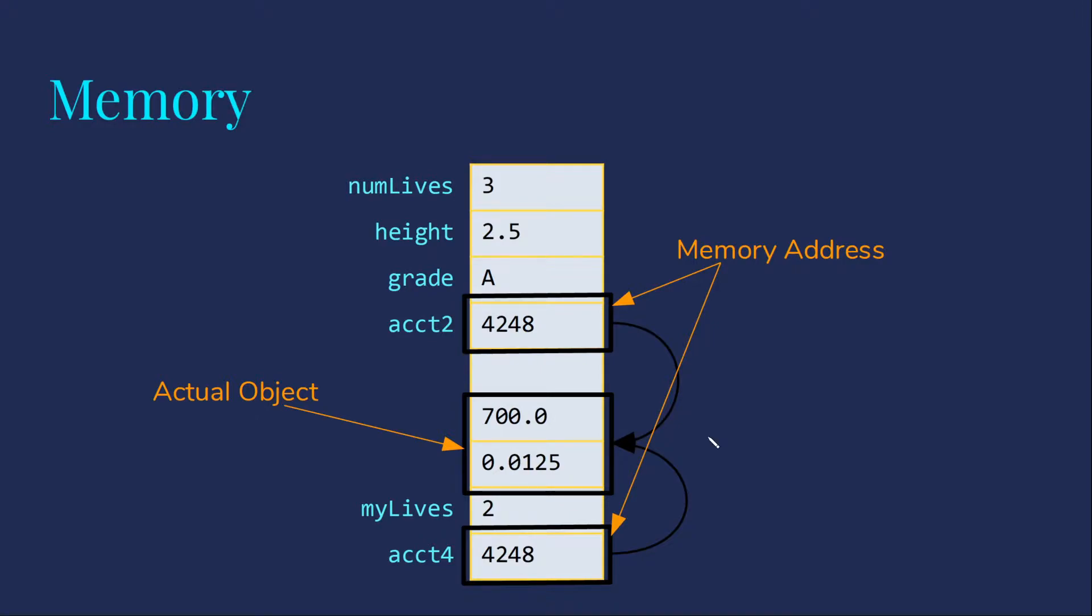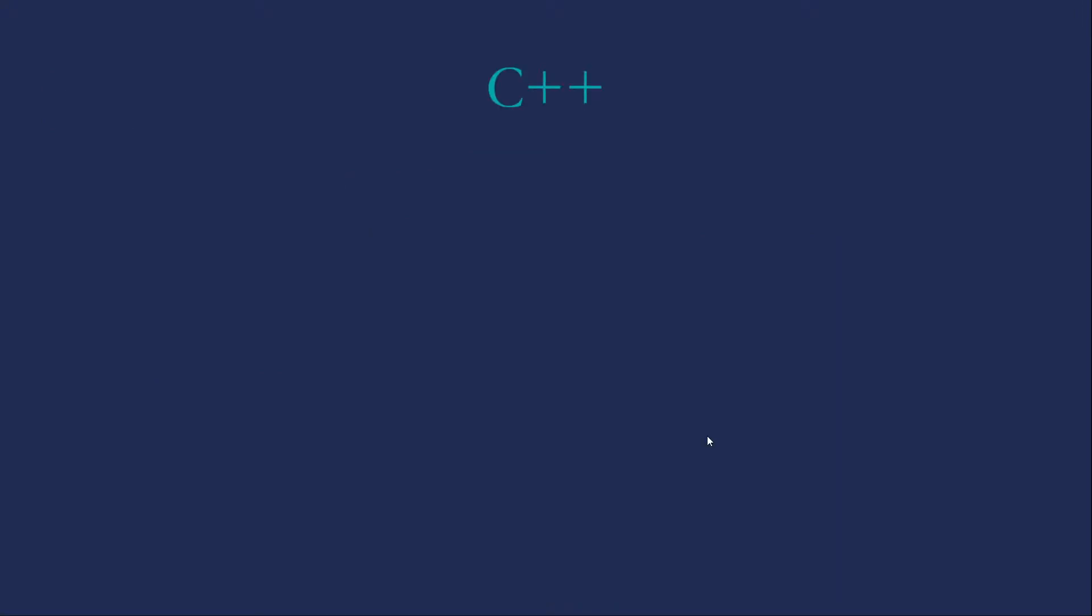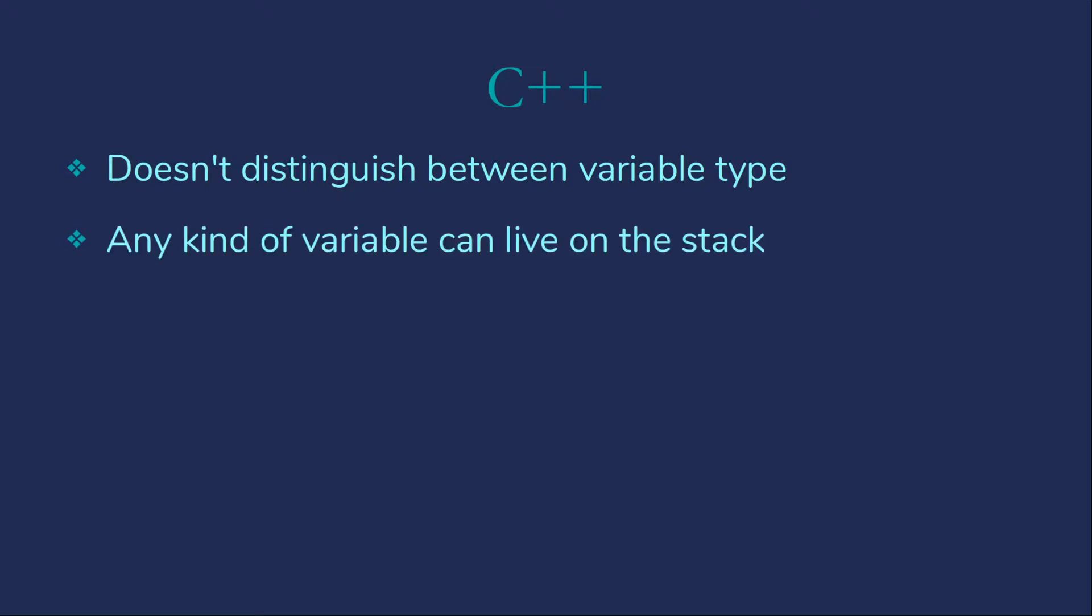With that in mind let's start thinking about C++. First of all, C++ doesn't distinguish between the variable types. Whatever type of variable you have you can put it on the stack, basically have it be like numLives or myLives where we get a copy of the whole thing. We can do that with objects, with strings which are a kind of object, ints, doubles, etc., just like we do it in Java.